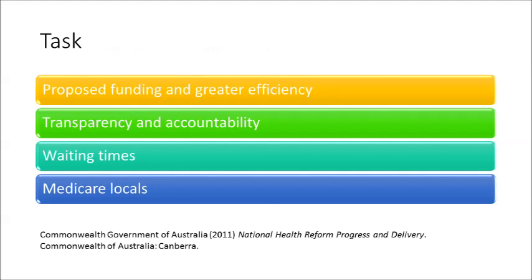The forward on page 1 and introduction on pages 3 and 4 of the National Health Reform Progress and Delivery Report describe the impetus and strategies for reform and use the following major headings to describe this in more detail. The headings are there in the coloured sections: proposed funding and greater efficiency, transparency and accountability, waiting time, and Medicare locals. Read the material under each heading and answer the questions on the next few slides.